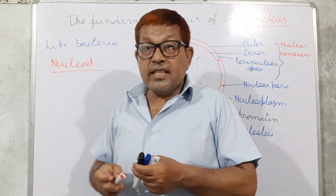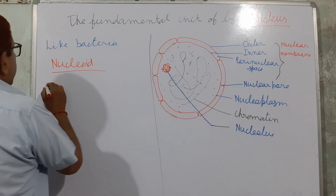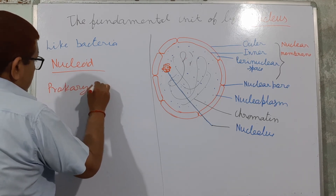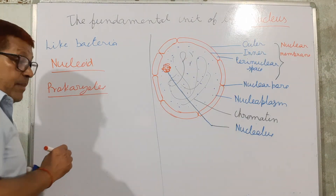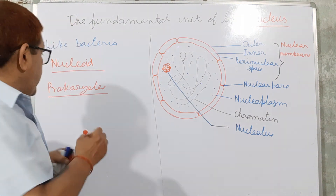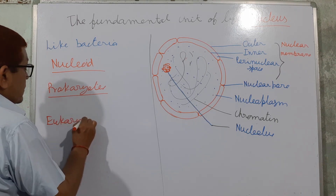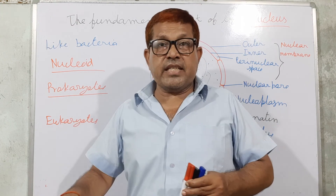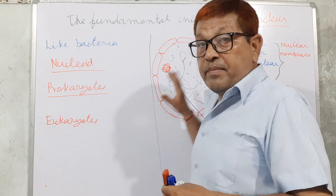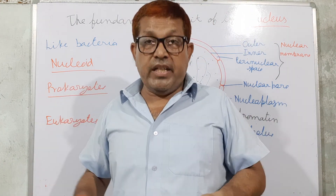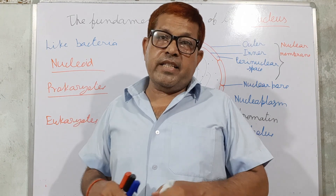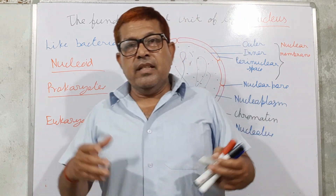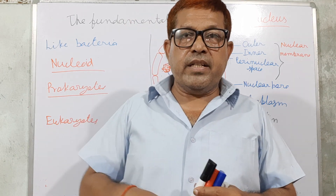Such organisms are called prokaryotes. And others having a well-defined nucleus are called eukaryotes. So two types of organisms are there: prokaryotes and eukaryotes. Organisms having a well-defined nucleus are called eukaryotes, and organisms that do not have a well-defined nucleus — the nucleus is called the nucleoid — such organisms are prokaryotes. Next time we will discuss in detail about the difference between prokaryotes and eukaryotes. Thank you, that's all for today.